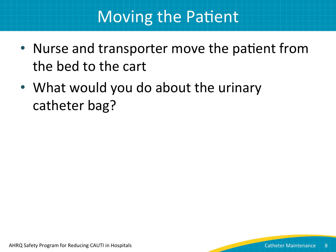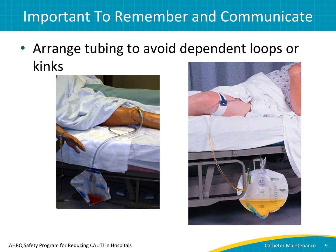That's right. The nurse should hand the urinary catheter bag to the transporter so he can attach it to the side of the cart, instead of laying it on the patient's abdomen. Although the patient is on the cart, the urinary catheter bag is attached to the side of the cart, and a securement device is in place. It's important to arrange the urinary catheter tubing on the cart so it isn't hanging down in what is called a dependent loop — you can see a loop like that in the picture on the right. A dependent loop would prevent urine from flowing freely. Instead, be sure the tubing looks like the picture on the left side of this slide.